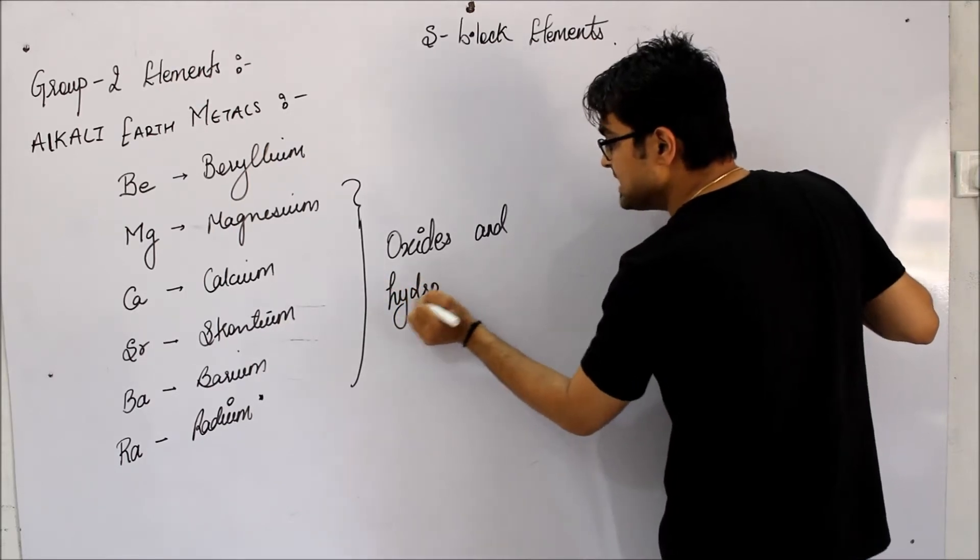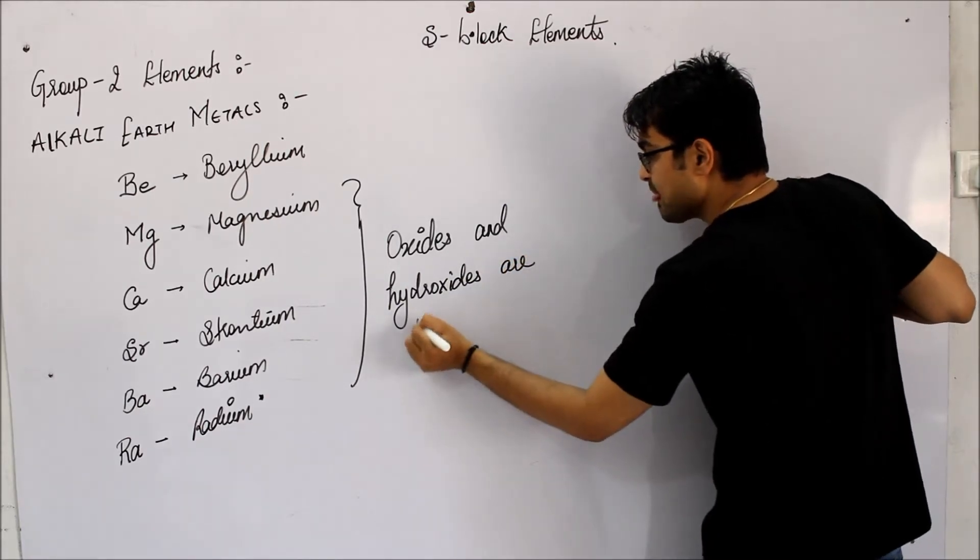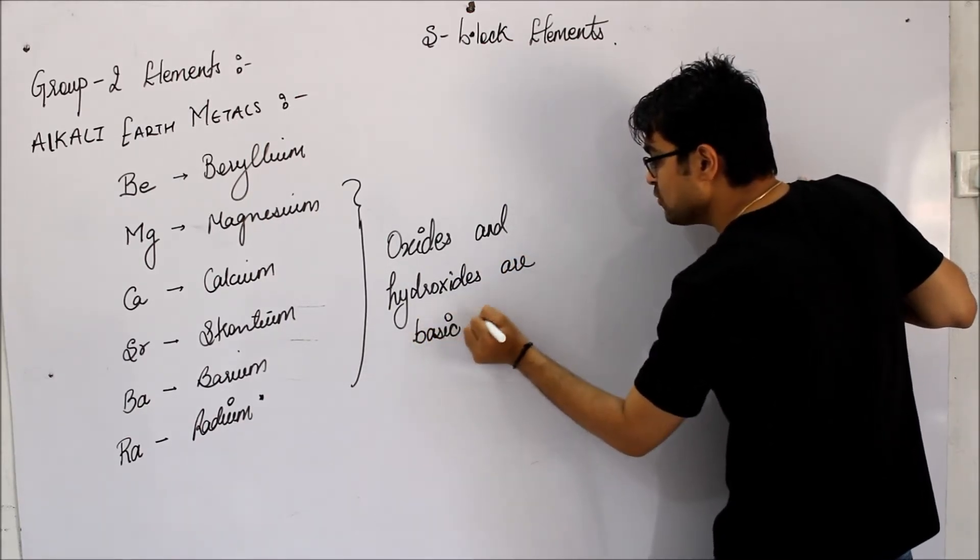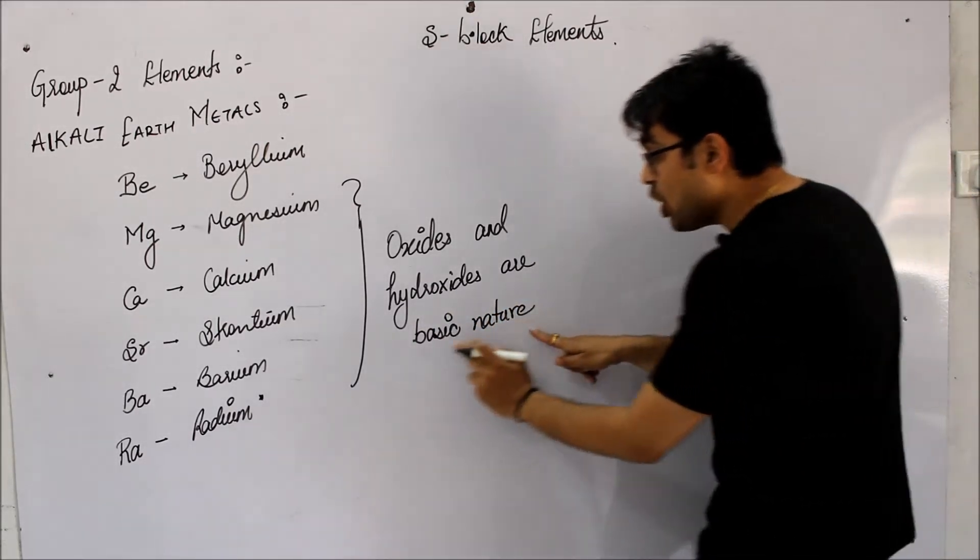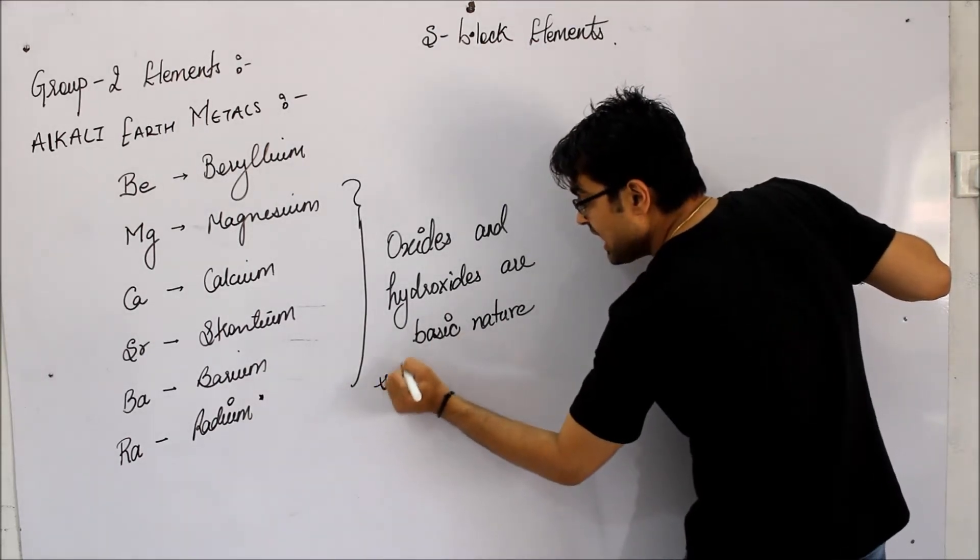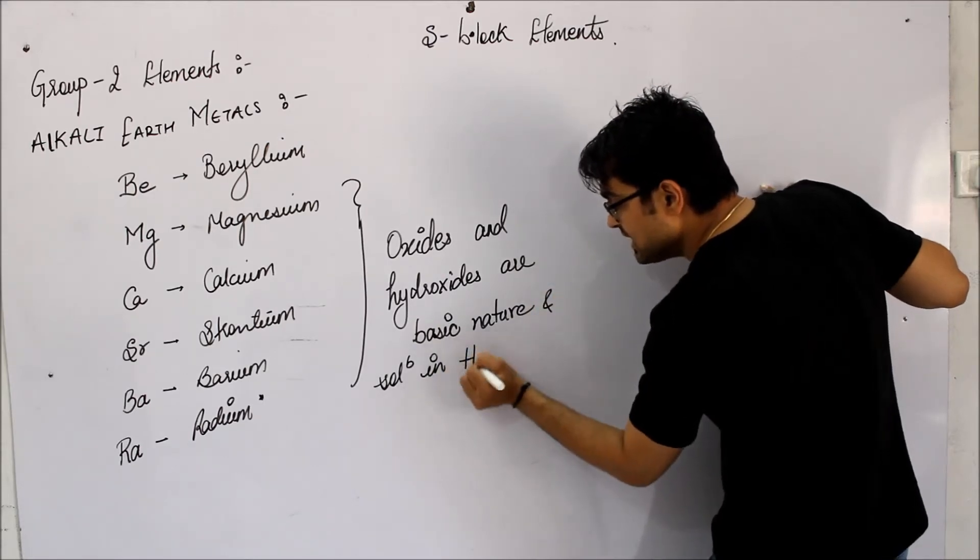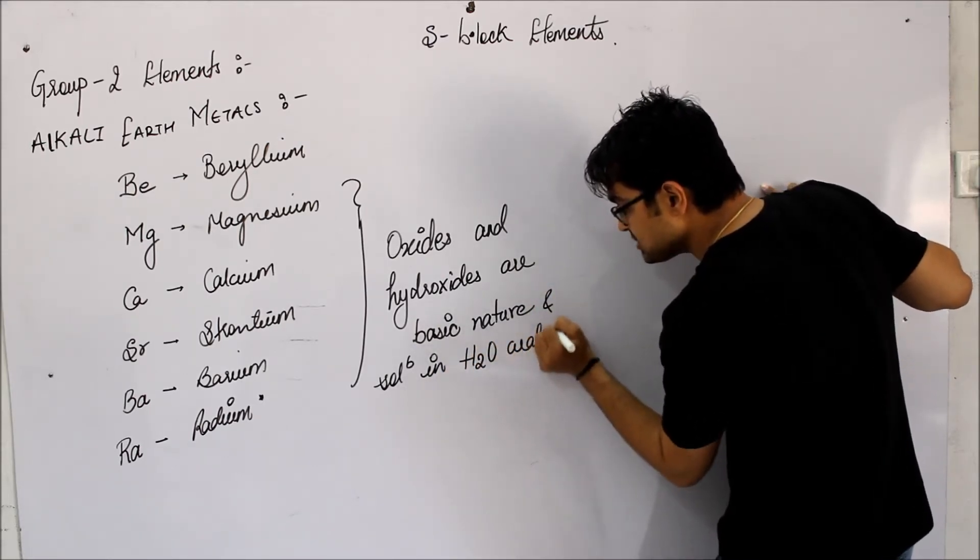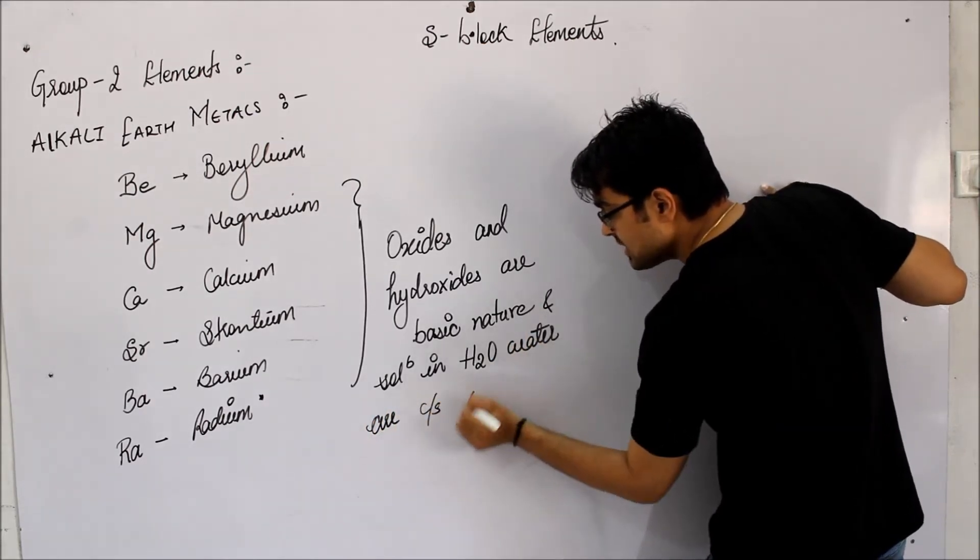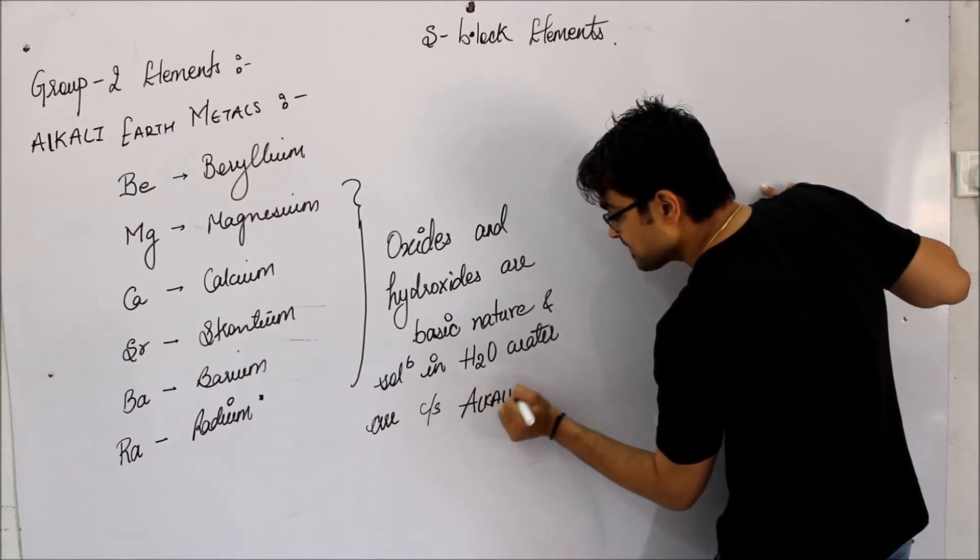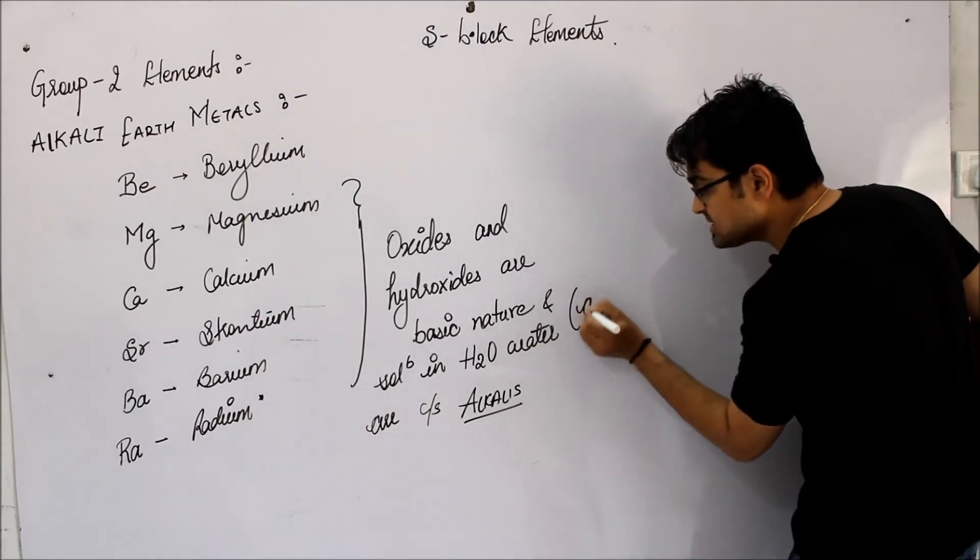All the oxides and hydroxides are basic in nature. They are basic in nature. And guys, all those bases which are soluble in water, they are soluble in water. And that is why they are called as alkalies.